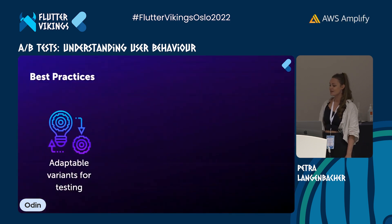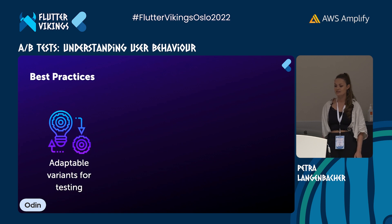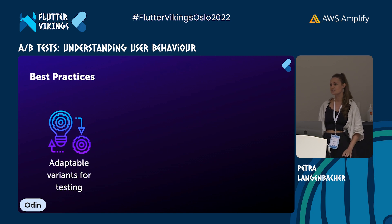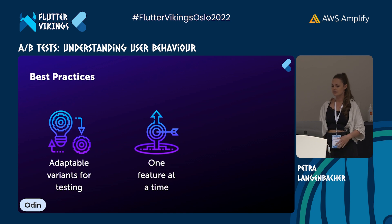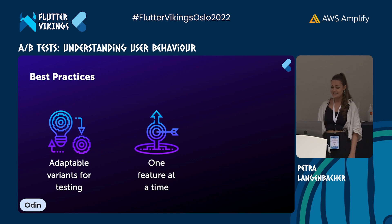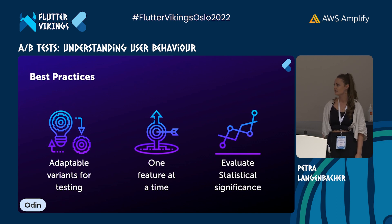Last but not least, some best practices we've learned over the years. First, to be able to test different variants, it's really helpful to offer the ability to edit test values in a debug app. We implemented this as a debug menu where you can change settings, and in the release version it's not visible. Second, to ensure tests don't influence each other, it's best to test only one feature at a time — that way you can be sure the outcome is really a result of your experiment. Third, the smaller the difference between variants, the larger the user base needs to be to deliver a statistically significant result.